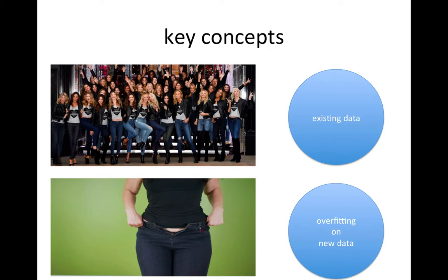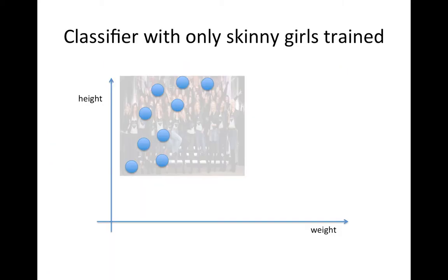You can think of the supermodels as a biased existing dataset in machine learning. Overfitting is when your classifier works well on your existing data but is not working well on new data. This is data on a two-dimensional chart.